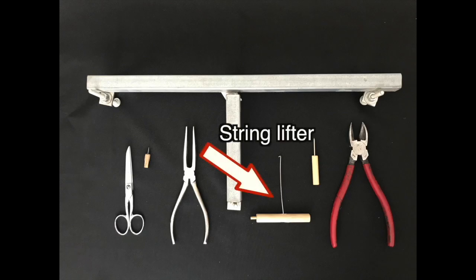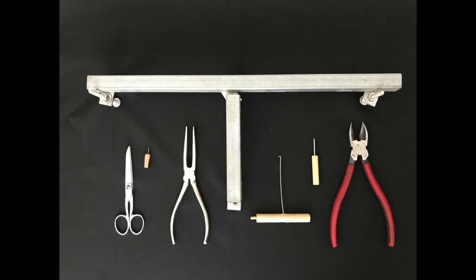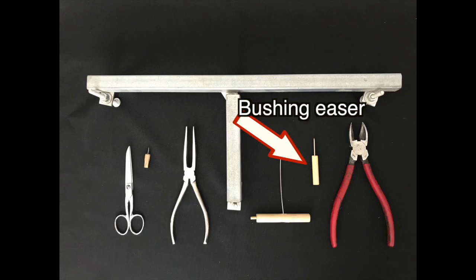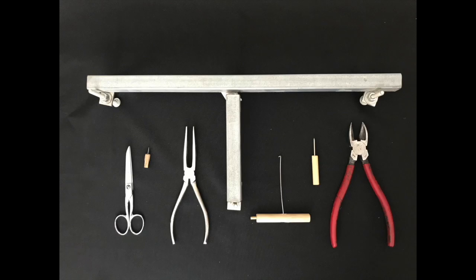Next is a simple string lifter that I made out of number 22 wire and a wooden dowel. I'll show you how to make those in another video. This is a simple little tool I made out of part of a damper wire, cut it off and stuck it into a little dowel, and I can heat that up, put it into the guide rail bushing and ease that bushing and enlarge it slightly.